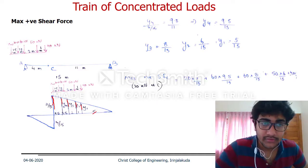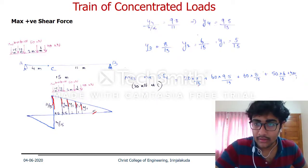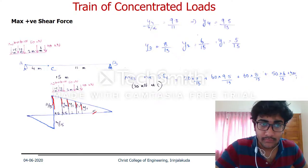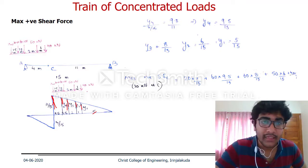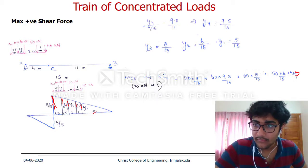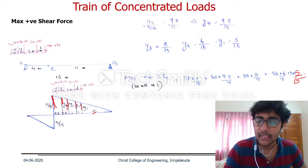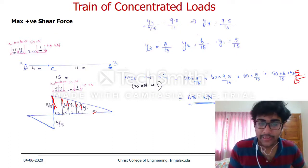The maximum positive shear force at C when the 120 kN is at C is obtained as: 120 times 11/15 plus 60 times 9.5/15 plus 60 times 8/15 plus 50 times 6/15 plus 40 times 5/15. The answer is 118 kN.